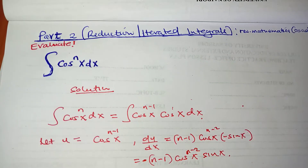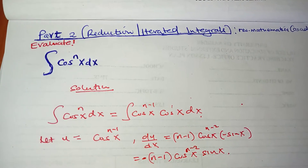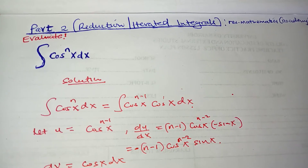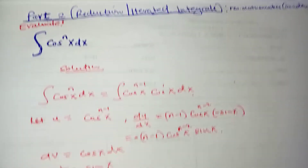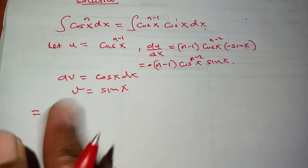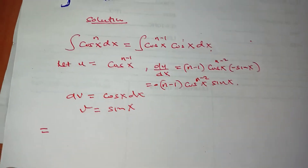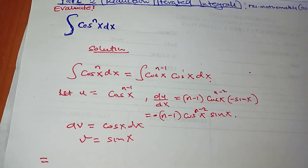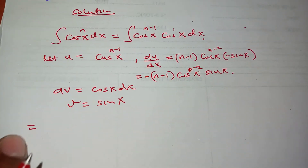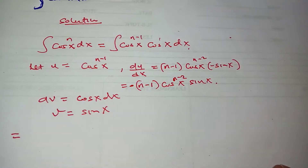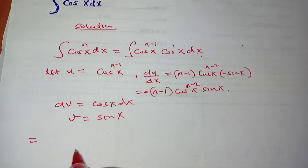Our dv equals cosine of x dx, so v, when you integrate cosine of x, gives sine of x. You don't need to add the constant of integration in this case. Whatever is on the left side of the equation is the integral of cosine of x to the power of n, so I don't have to write it.